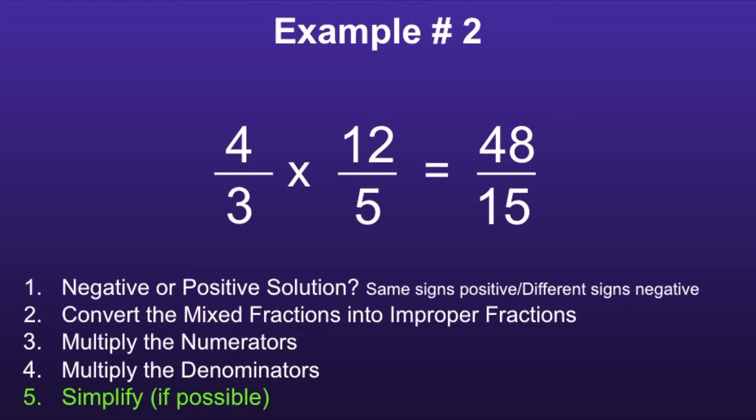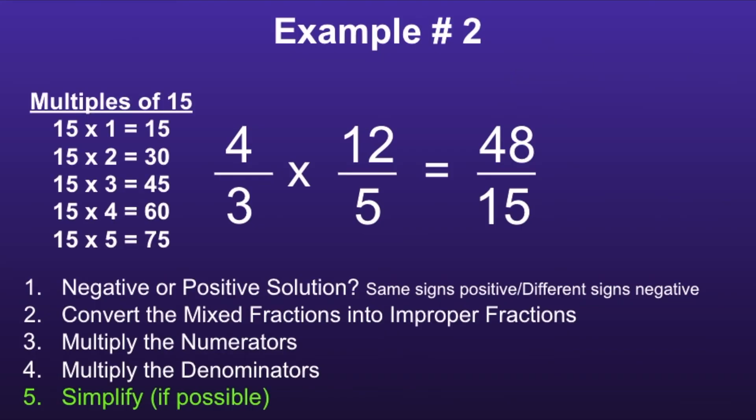Since 48 is greater than fifteen, we know that this is an improper fraction. We can convert an improper fraction to a mixed fraction. First we want to find out how many fifteens can go into forty-eight. If we pull up the multiples of fifteen, we can see that fifteen can go into forty-eight three times, and fifteen times three is forty-five. So we know we will have three wholes in this fraction. When we subtract the forty-five parts from the forty-eight parts, we can see that we have three parts remaining. So our fraction would be three over fifteen. Notice I kept the same denominator.